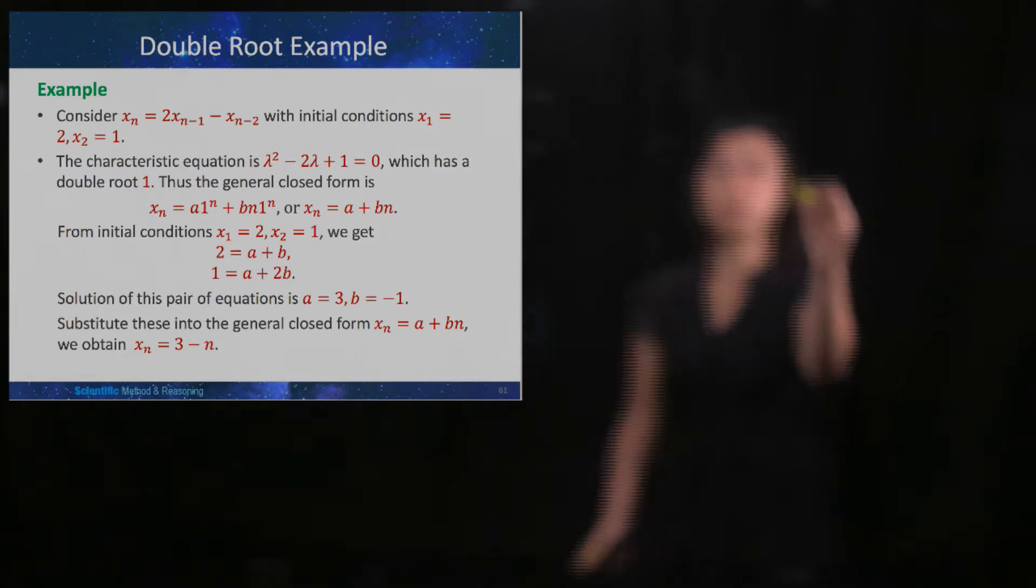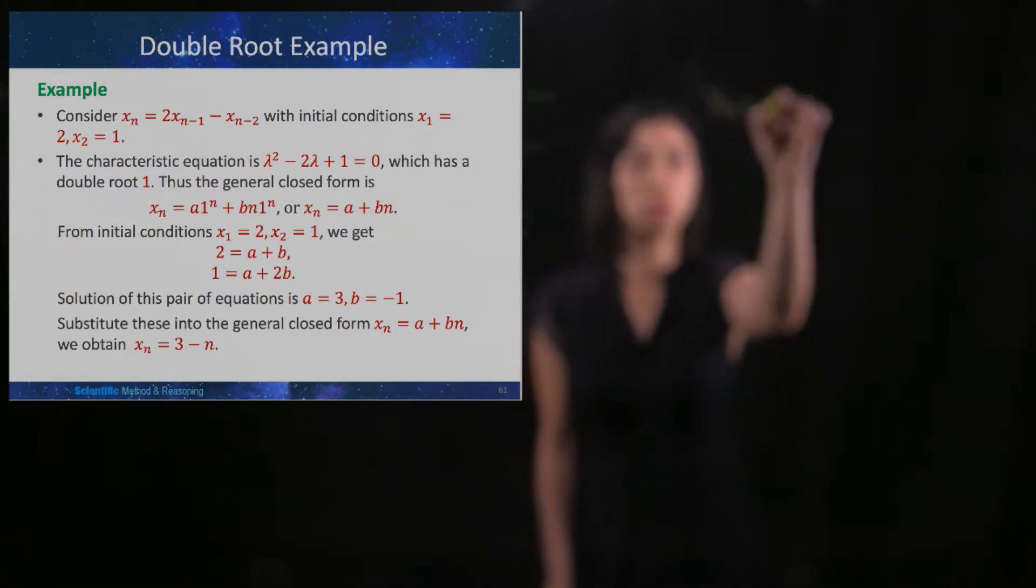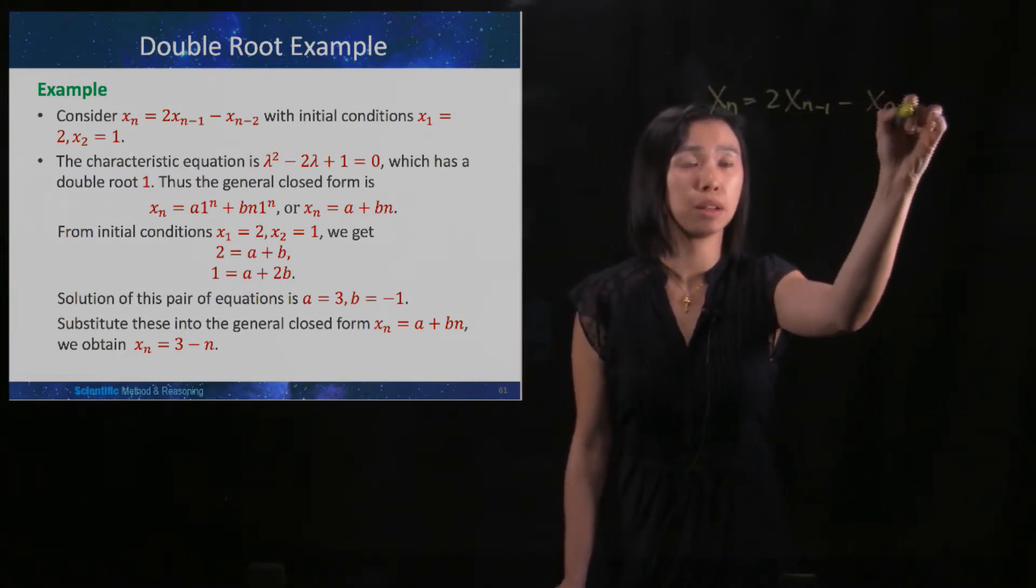The difference equation xn, which is equal to 2xn minus 1 minus xn minus 2.